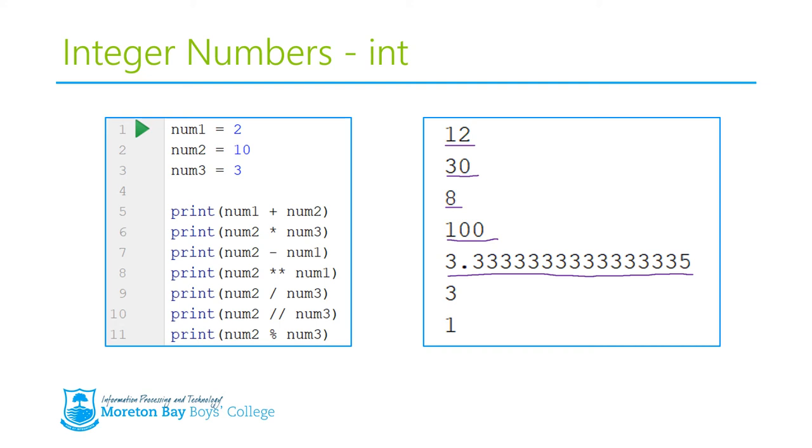Num2 floor division num3, which is 10 floor division 3, gives us 3. And then modulo, num2 modulo 3, gives us the remainder of 1. So, those are our answers for what that code will provide.